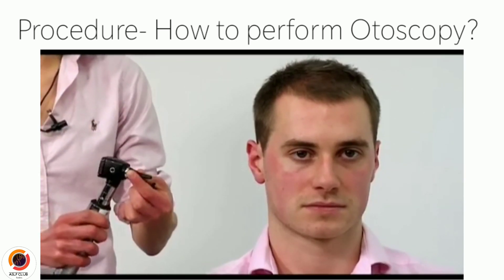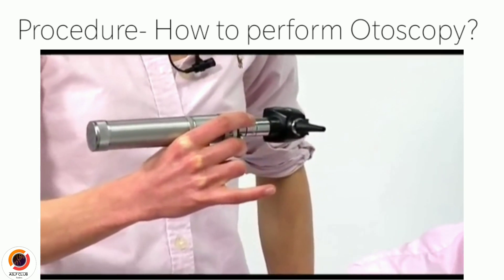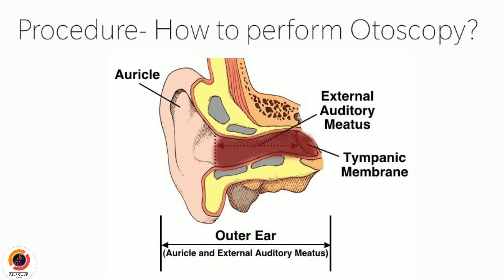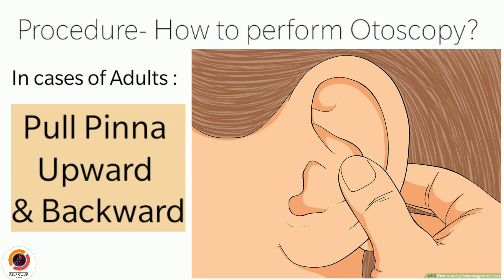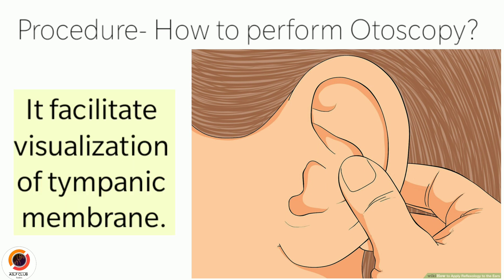It is generally advisable to hold the otoscope like a pen, in between the first and second fingers. No matter how you hold it, the goal is to view the ear and its structures with less discomfort to the patient and good visualisation for the examiner. As the ear canal is S-shaped and not straight, the examiner should grasp the patient's pinna and pull upward and backward in adults, while in children, pull the pinna downward and backward. This step will facilitate visualisation of the tympanic membrane.